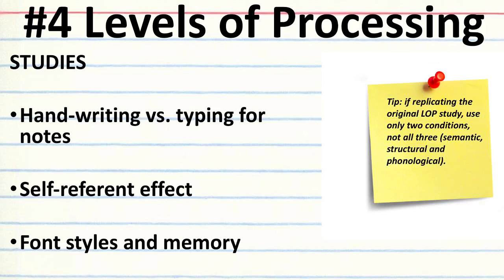I would recommend only doing two of those conditions. Also, the most important level of processing to think about would be the semantic if you are looking at things like handwriting versus typing. Not all three of those levels of processing might be relevant to explain or to use the theory to explain the results of those studies.